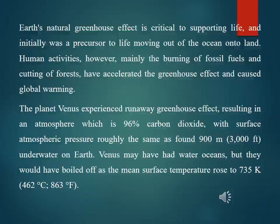The planet Venus experienced a runaway greenhouse effect, resulting in an atmosphere which is 96% carbon dioxide, with the surface atmospheric pressure roughly the same as found 900 meters or 3,000 feet underwater on Earth. Venus may have had water oceans, but they would have boiled off as the mean surface temperature rose to 735 Kelvin, or 462 degrees Celsius, or 863 degrees Fahrenheit.